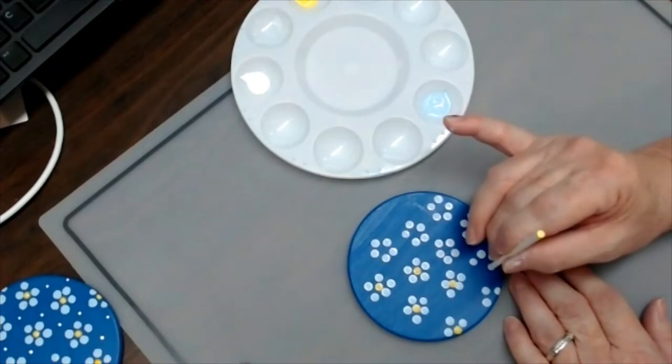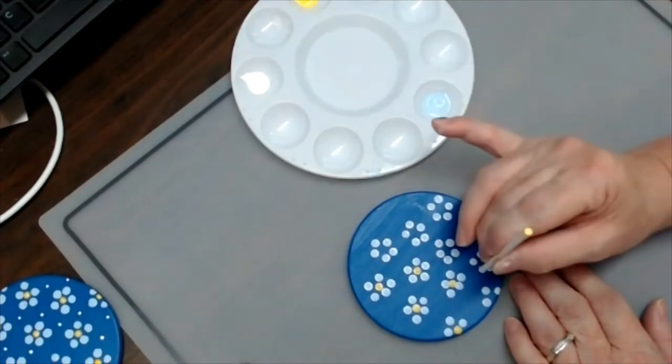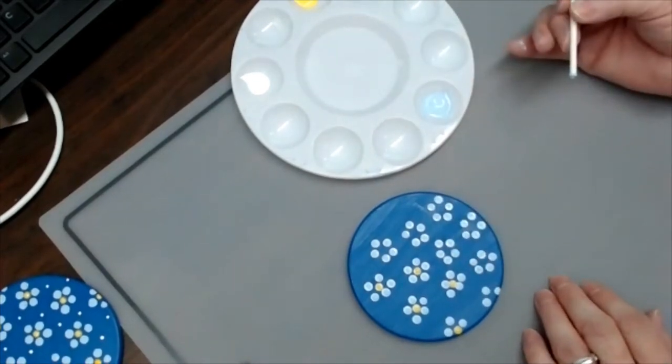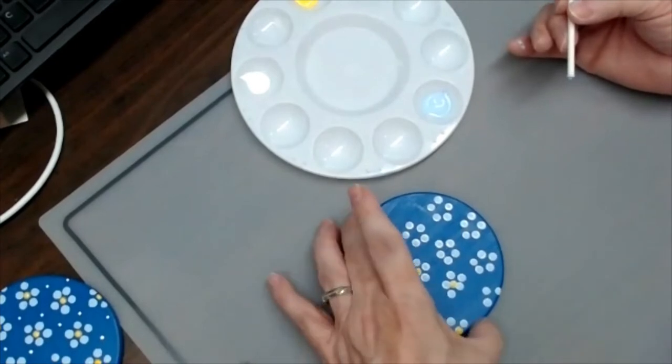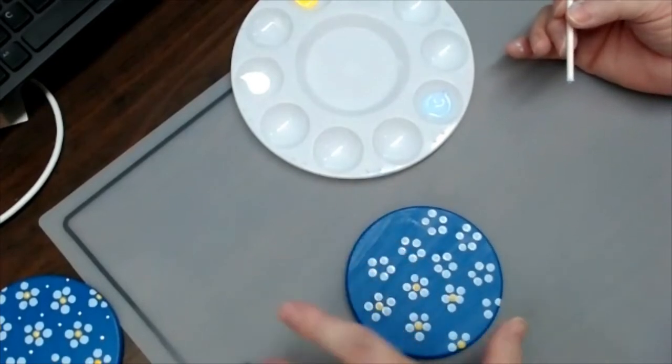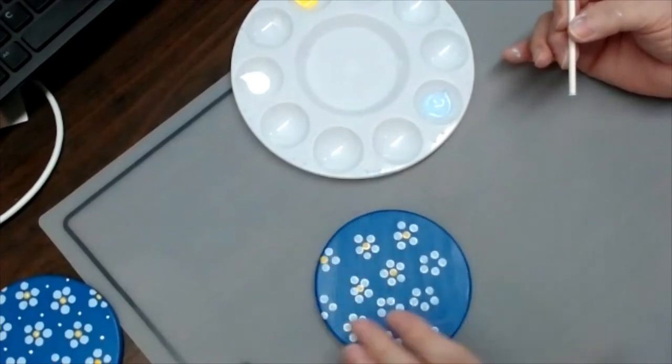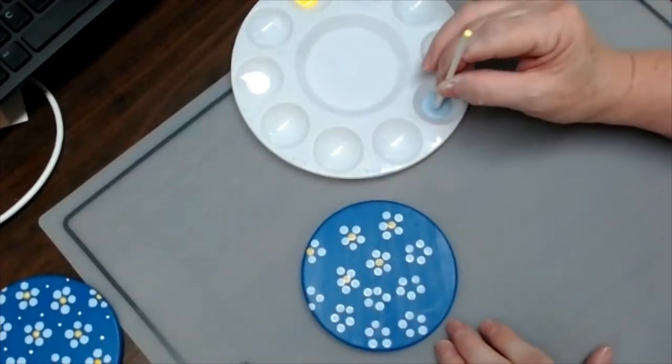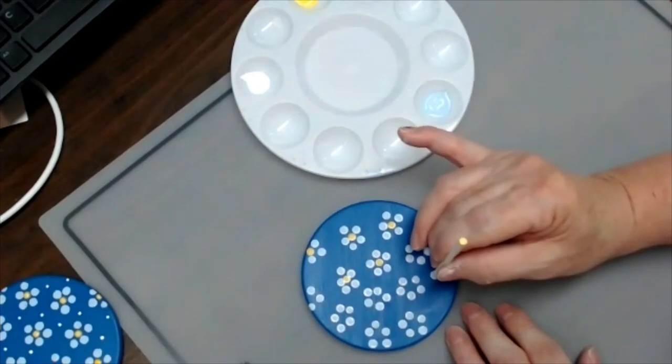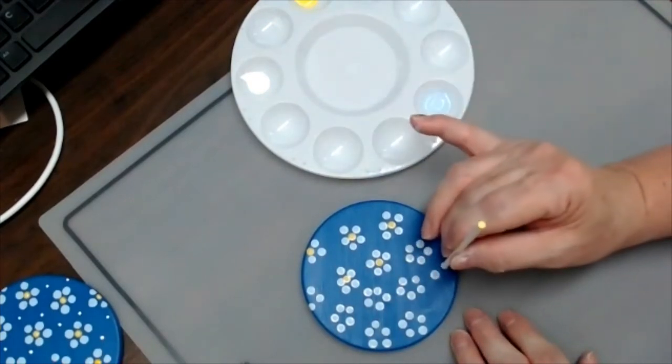And if you're really not happy with the way that your petals look, just take a little bit of water, wipe off the petals, and then you can come in. If you need to, you can add a little bit more blue paint to cover the areas and continue on with your design.